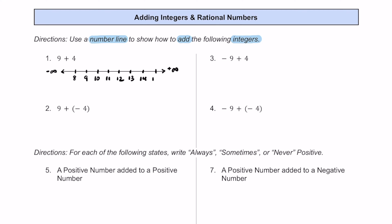We have space for 15, so I'll go ahead and put it. We're starting off with the number 9, so we put a dot right at that number 9. Because we're adding a positive 4, that means we move to the right: 1, 2, 3, 4. We end up at 13, so 9 plus 4 equals 13.